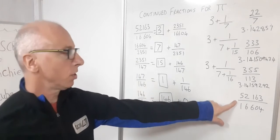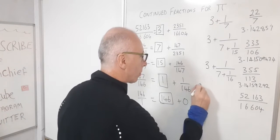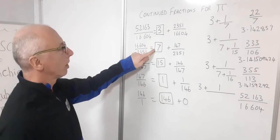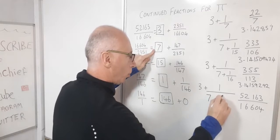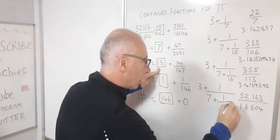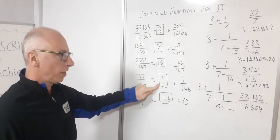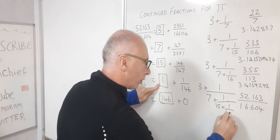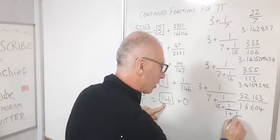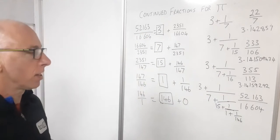So now let's write this as a continued fraction and let's see what the decimal looks like. So now we've got 3 plus 1 over 7 plus 1 over 15 plus 1 over 1 plus 1 over 146. So that is this number as a continued fraction.